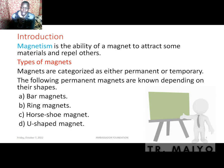Magnetism is the ability of a magnet to attract some materials and repel others. We have several types of magnets, and magnets are categorized depending on their shape — the shape of the magnet gives it its name.